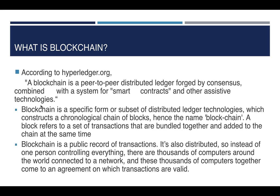But why the name blockchain? A block refers to a set of transactions that are bundled together and added to the chain of every peer at the same time. The next block will be appended to the existing block and the process continues, forming a chain. That is why the name blockchain.